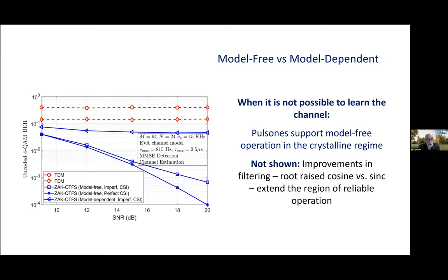At the bottom, the star curve, that's perfect CSI. The important curve is the curve with the squares just above it. This is in the crystalline regime, and what the squares are showing is that model-free operation is successful, and that performance is only slightly worse than performance with perfect CSI.